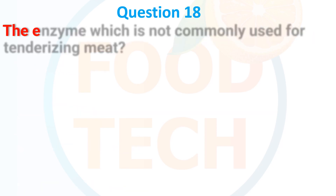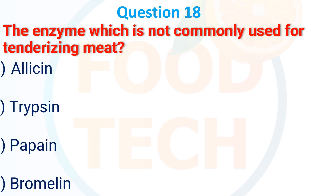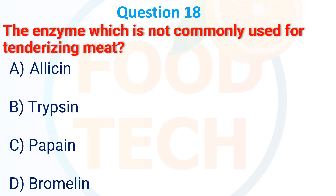The enzyme which is NOT commonly used for tendering meat: A. Allicin, B. Trypsin, C. Caffeine, D. Bromelain. The answer is A. Allicin.